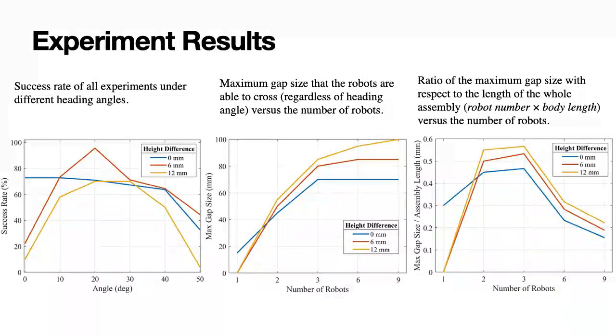Here we show the quantitative result of our experiment. The first figure shows the success rate of the experiment under different heading angles. You may see that heading angles around 20 and 30 degrees have higher success rate. This is because the robot is longer on this diagonal.